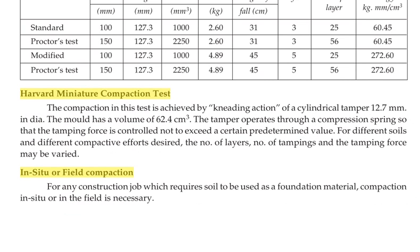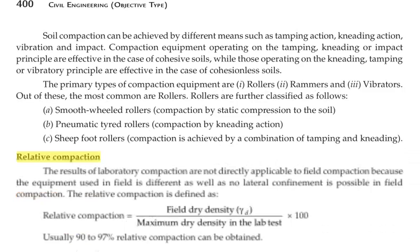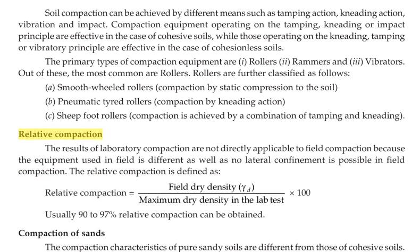For in-situ or field compaction, for any construction job which requires soil to be used as a foundation material, compaction in the field is necessary. Soil compaction can be achieved by different means such as tamping action, kneading action, vibration, and impact. Compaction equipment operating on the tamping, kneading, or impact principle is effective for cohesive soils, while those operating on the kneading, tamping, or vibratory principle are effective for cohesionless soils.